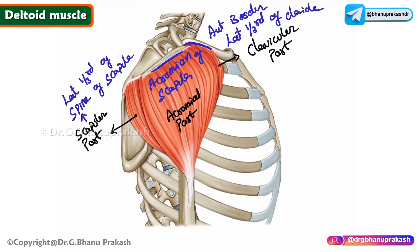The muscle fibers of all three parts run inferiorly towards the shaft of the humerus, as you can see from the direction of the fibers. They converge to form a narrow strong tendon, which inserts into the deltoid tuberosity. This deltoid tuberosity is located approximately halfway down the lateral aspect of the shaft of the humerus.